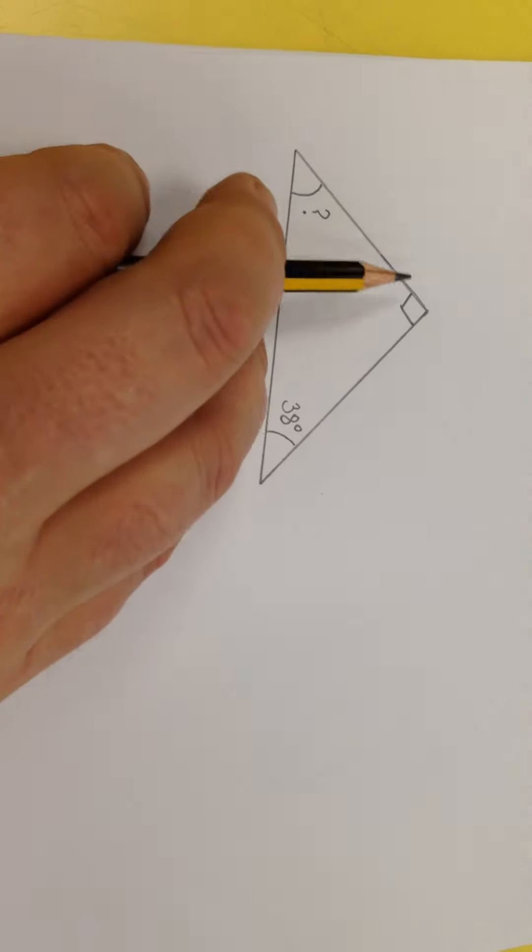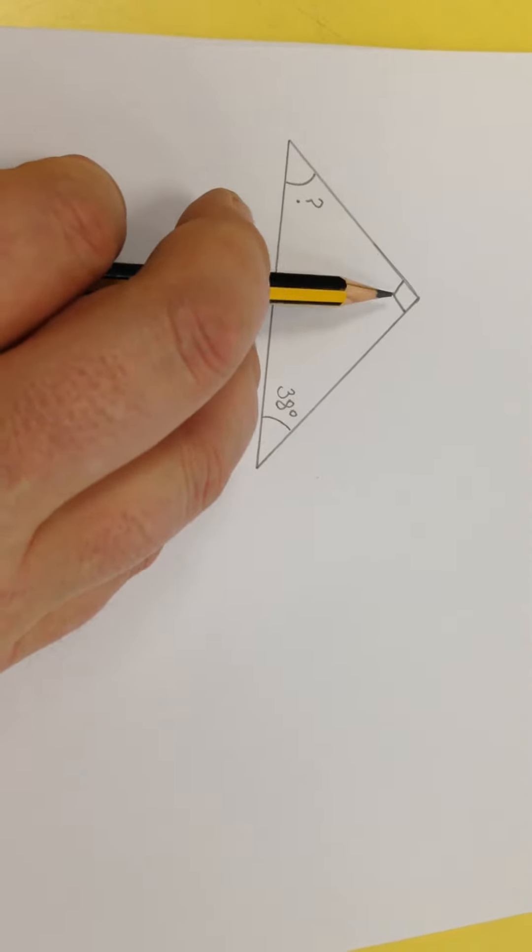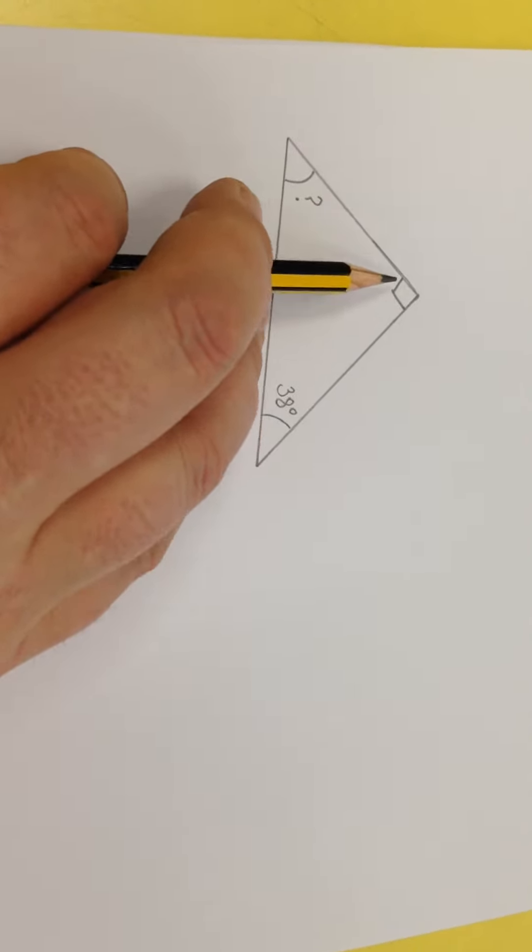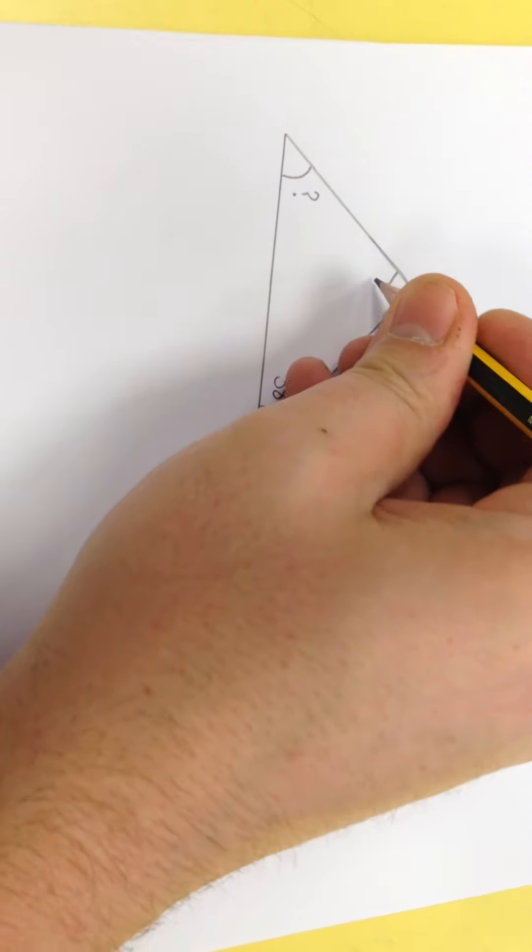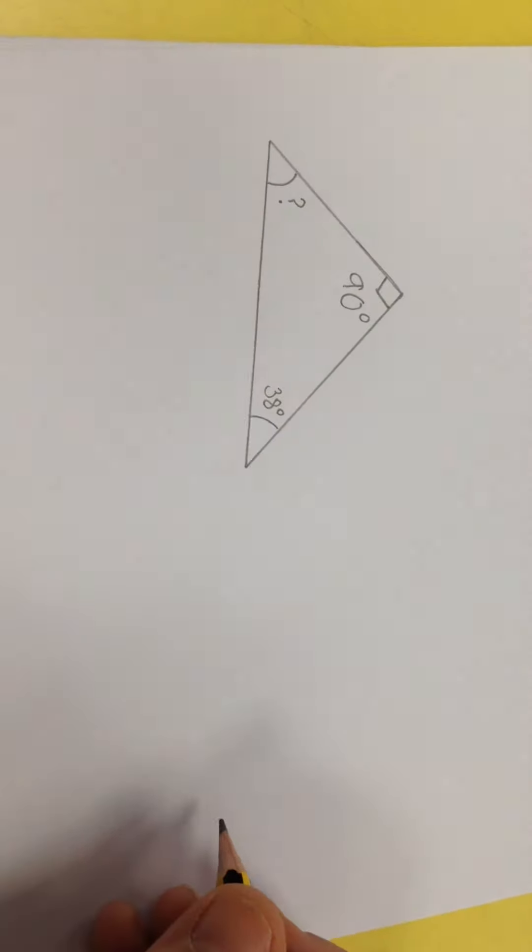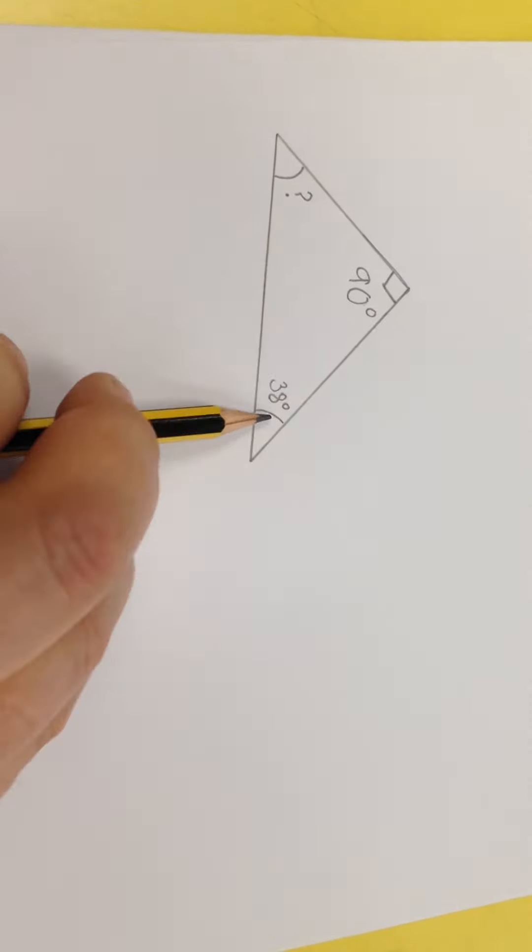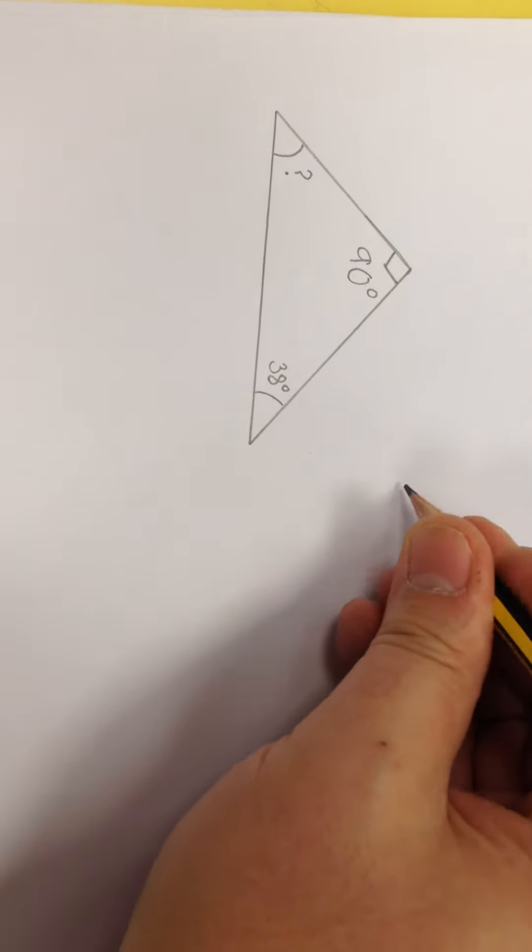This one, again, we've got three angles. This time we see the symbol we've seen before. This little symbol shows that it's a right angle, so I'm just going to jot that in to remind me that's 90 degrees. Again, as before, I'm going to work out how many I've got altogether so far.